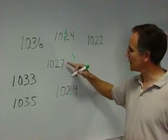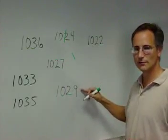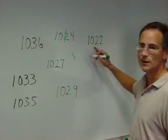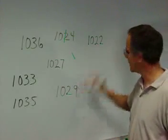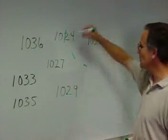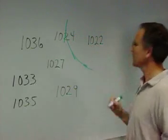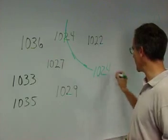Is 1,024 between 1,027 and 1,029? No, it's not. So, we're not going to put anything there. Is it between 1,022 and 1,029? Yes, you put a little dash mark. Once we have the dashes, then we can connect them and label it 1,024 millibars.